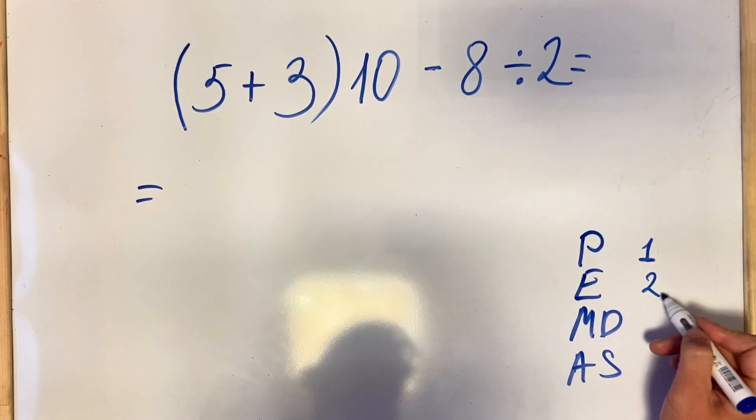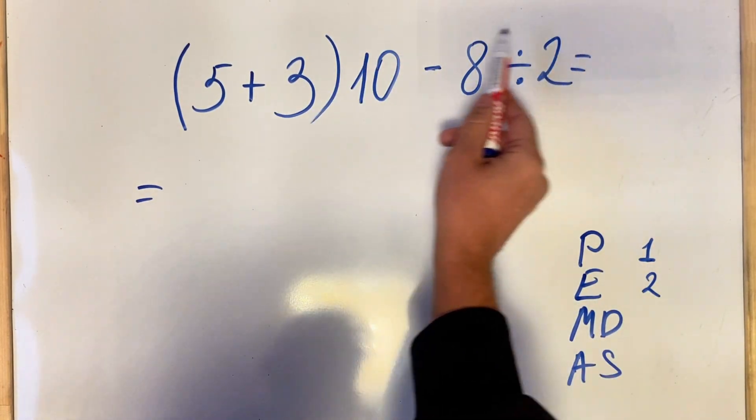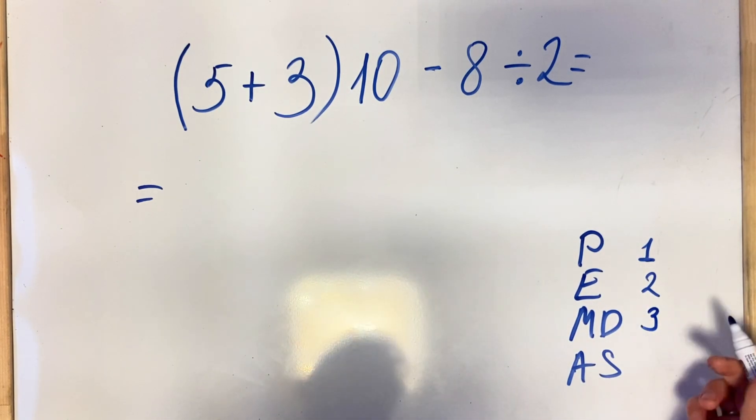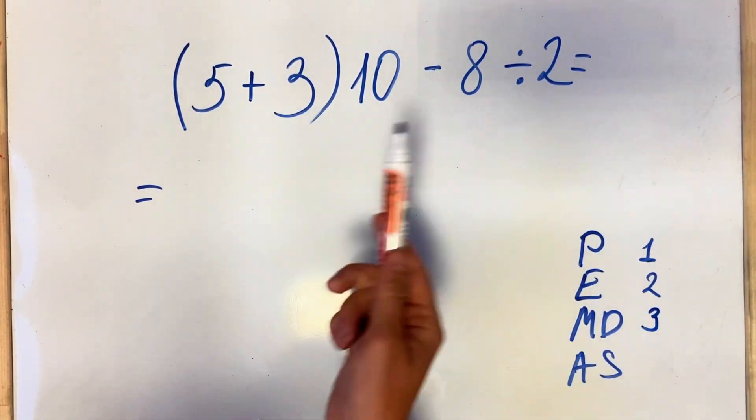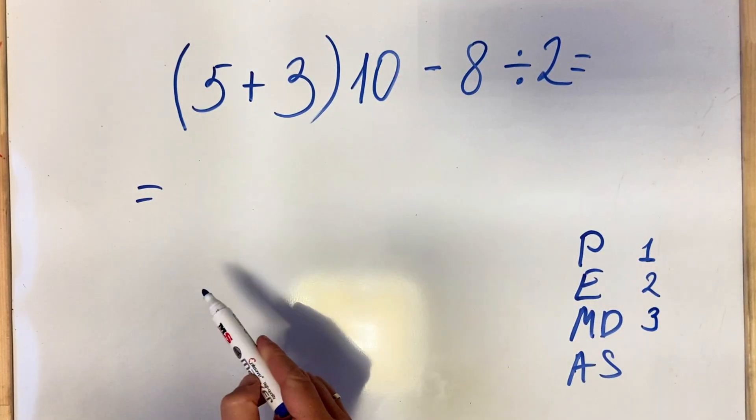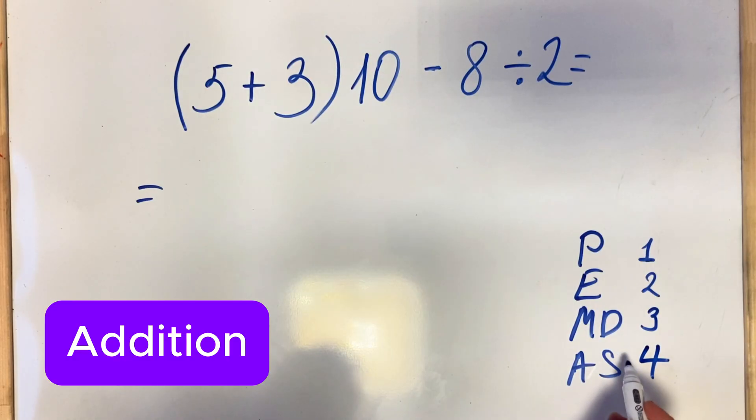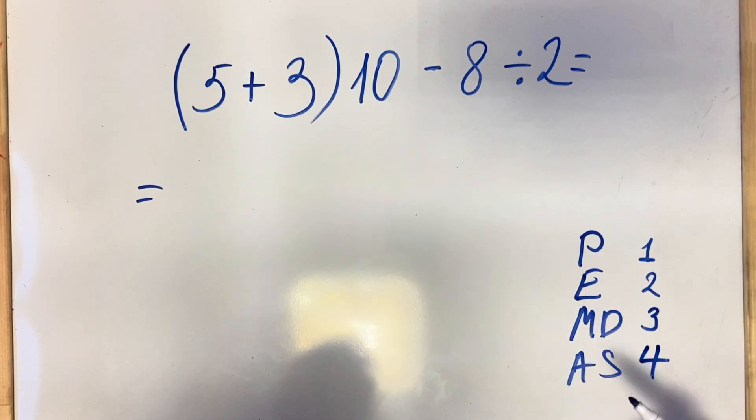E stands for exponents, we do it in second place but we don't have any exponents. Multiplication and division we do in third place from left to right, and addition and subtraction we do last.